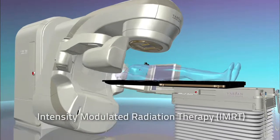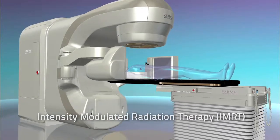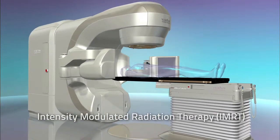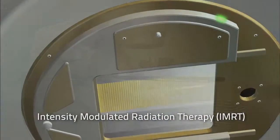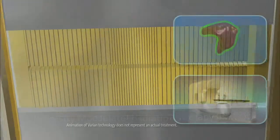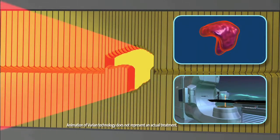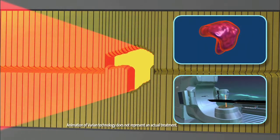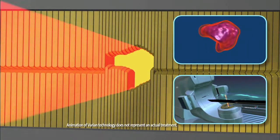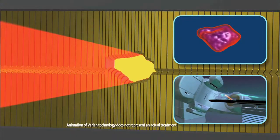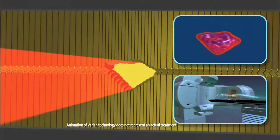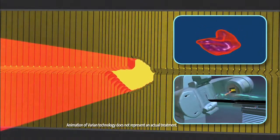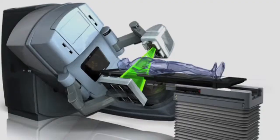Intensity modulated radiation therapy, or IMRT, also uses 3D treatment planning to adjust the intensity and shape of thousands of radiation beamlets from many different angles. By modulating the intensity with these leaves, it has allowed us to go to much higher doses, with less side effects, and higher cure rates.